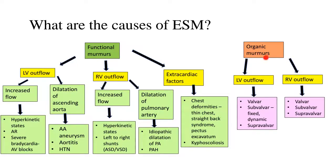More importantly, organic murmurs are classified at various levels — both on the left and right side — at the valvar, subvalvar, and supravalvar levels. The valvar level is one of the more common causes of ESM, but it is important to note the subvalvar level on the left side; for example, a dynamic subvalvar obstruction like hypertrophic obstructive cardiomyopathy (HOCM) can also give rise to an ejection systolic murmur.